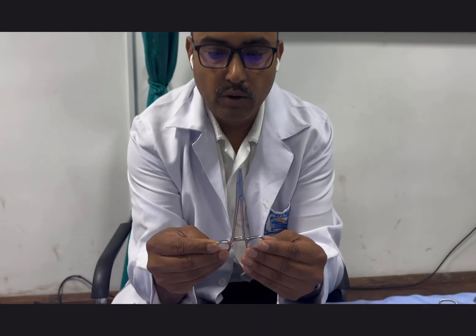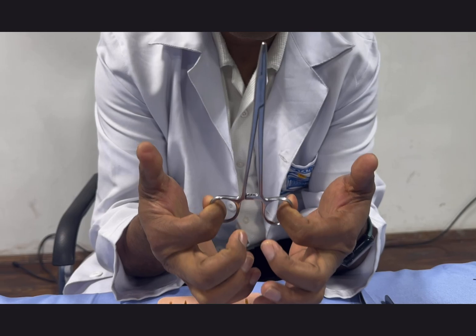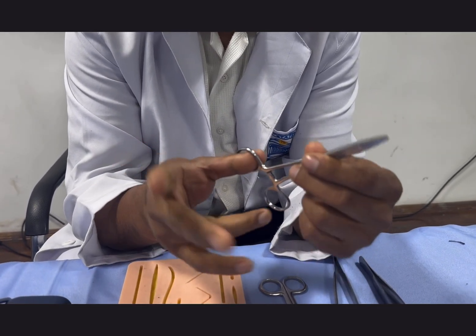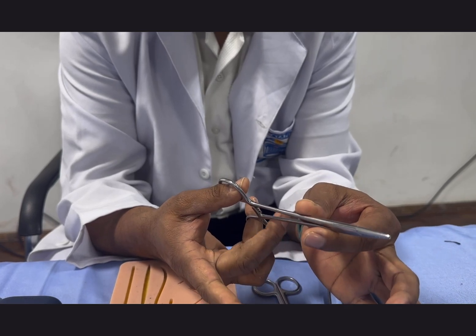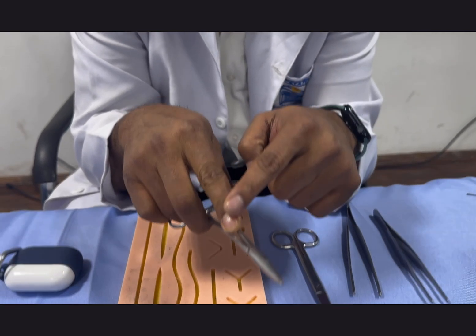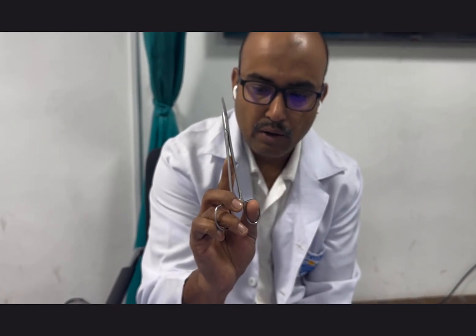Now this is a needle holder. This is closed - it has a lock known as a ratchet. How to hold it: first put a thumb, then the ring finger here, then support by your middle finger and guide by your index finger. This is the holding technique.